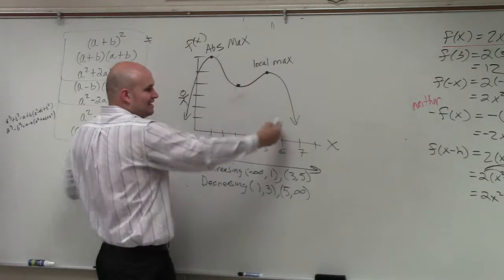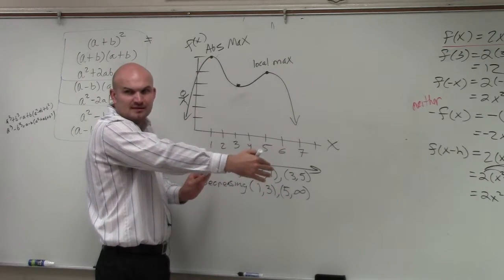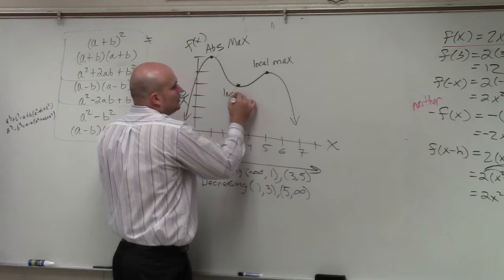This is a minimum, but since the graph continues to go down, it's not an absolute minimum. Does everybody see that? So this is just what we call a local min.